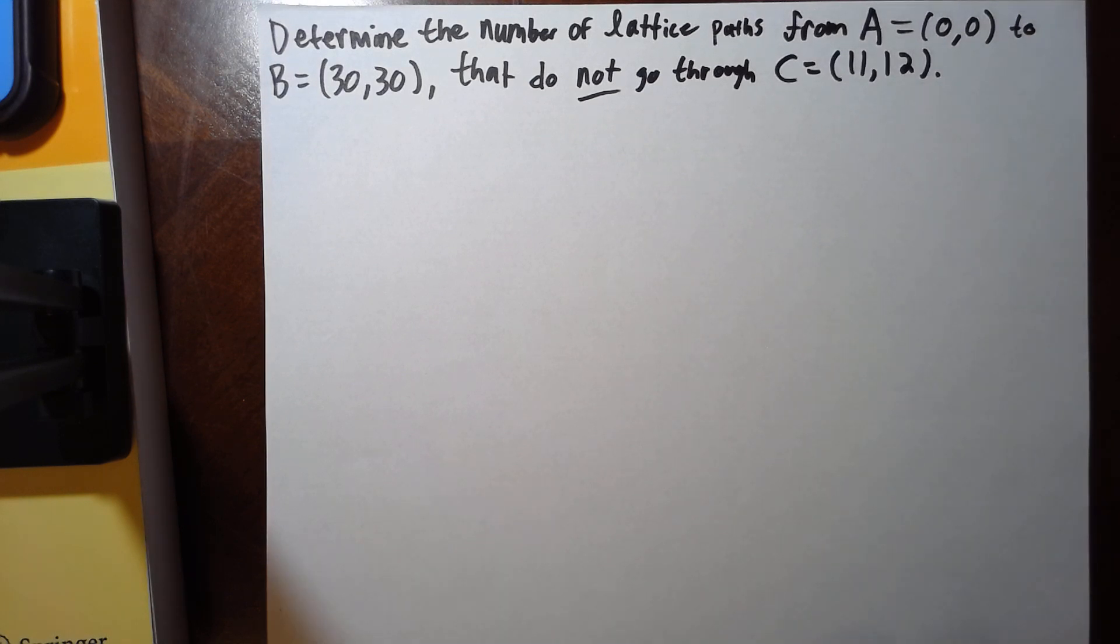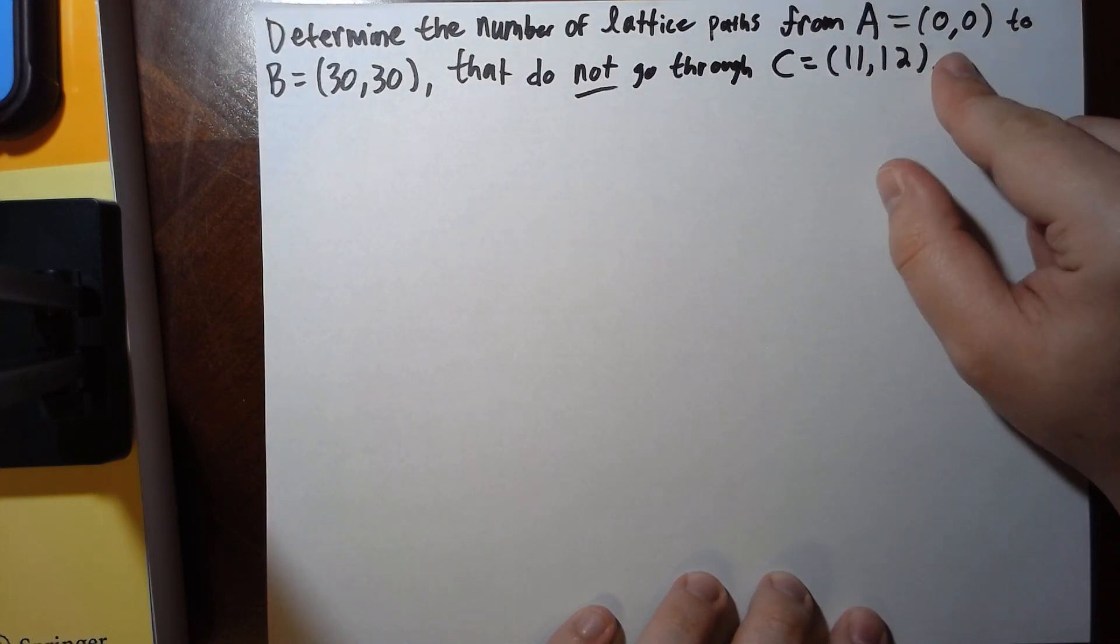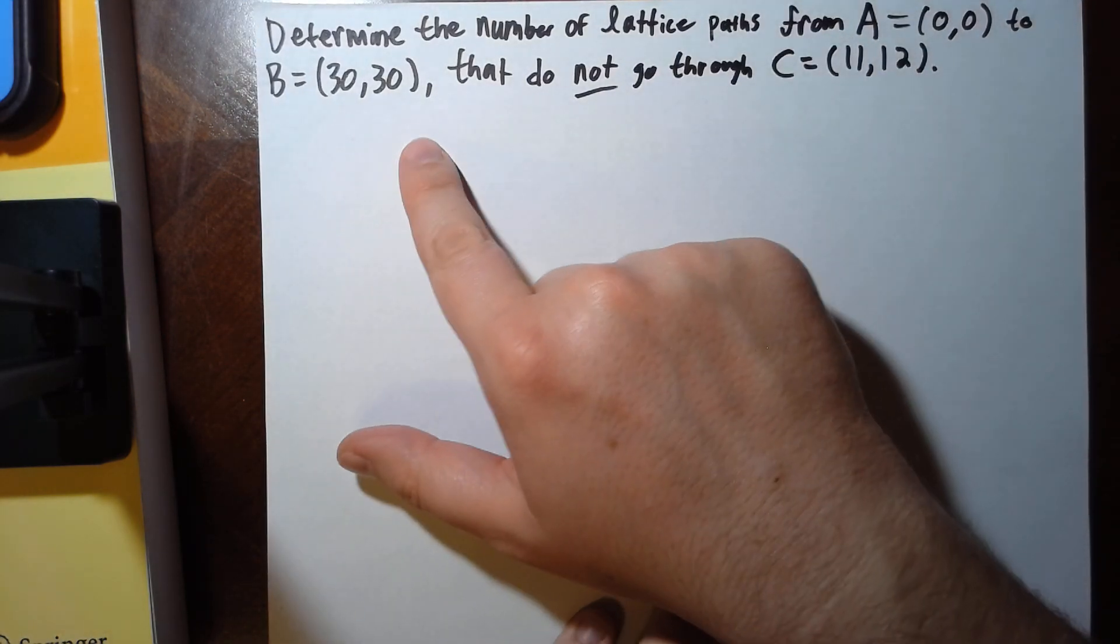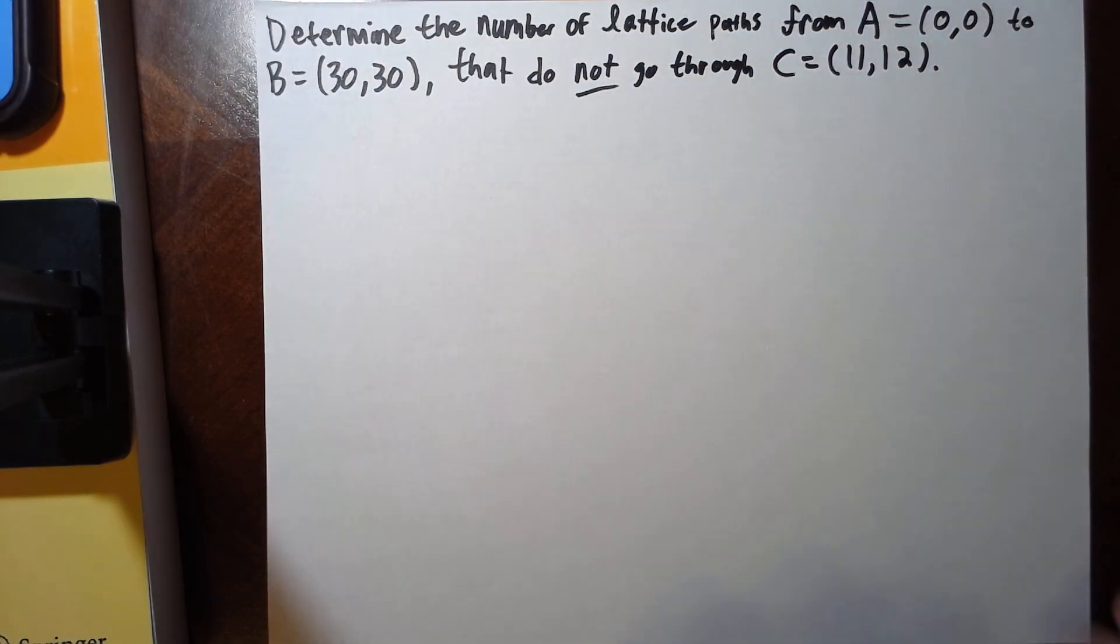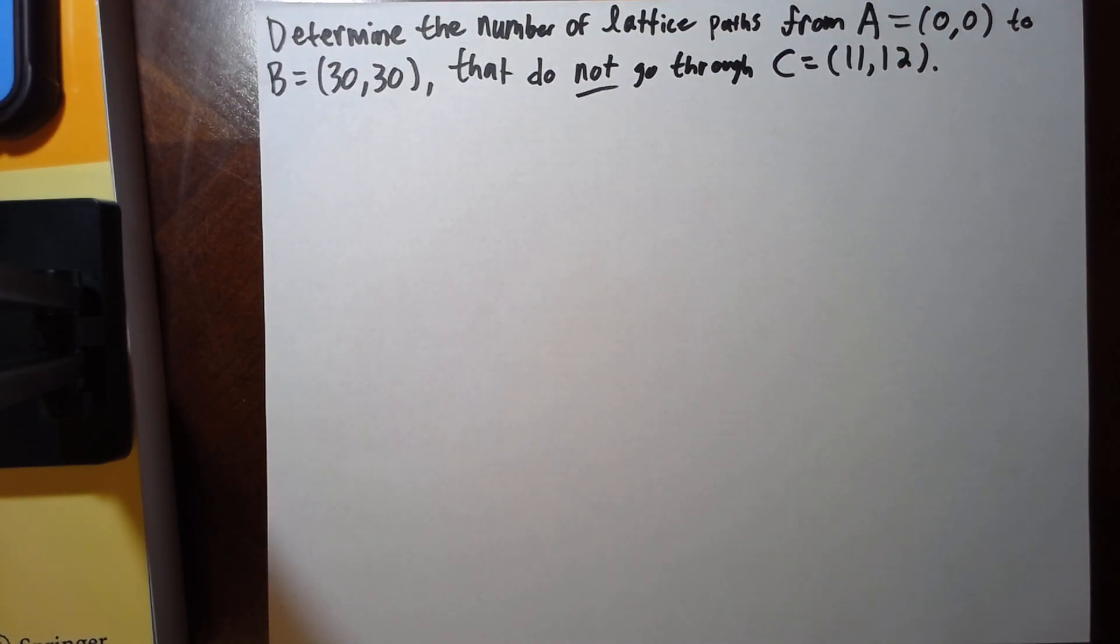Alright, so I have a counting problem. You want to determine the number of lattice paths that go from (0,0) to (30,30) that do not go through (11,12).